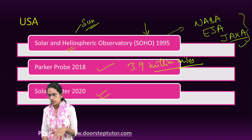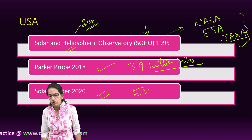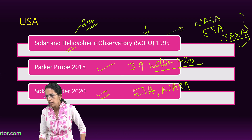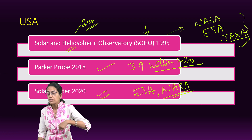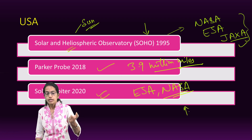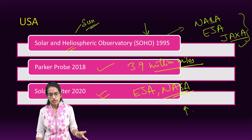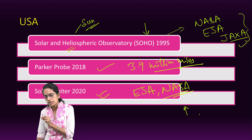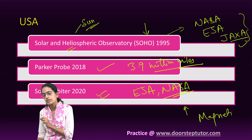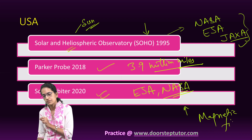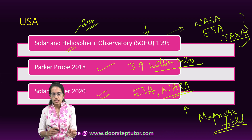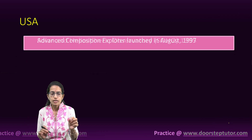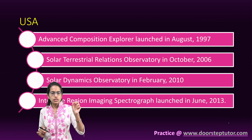Next to it was the Solar Orbiter — a joint mission of the European Space Agency and NASA. The idea was that it would fly even closer to the sun than the Parker Probe and would bring in samples from the sun's atmosphere as well as study the magnetic field of the sun. Each of these missions had certain important variations and things for which they were known.